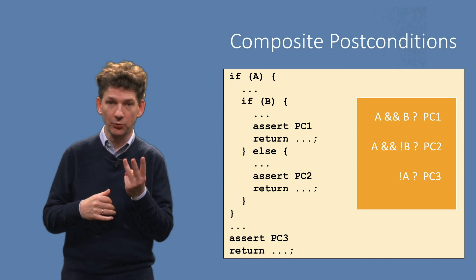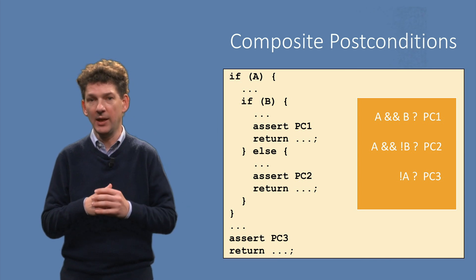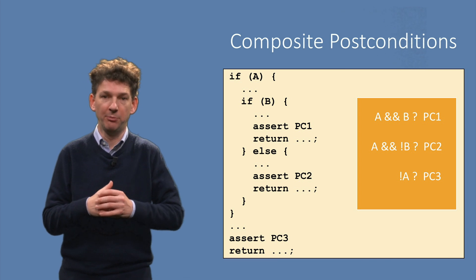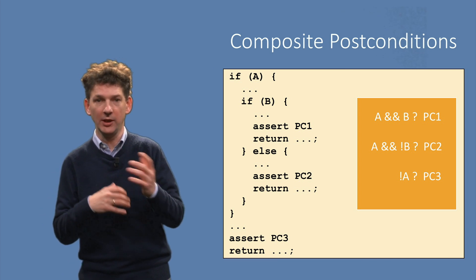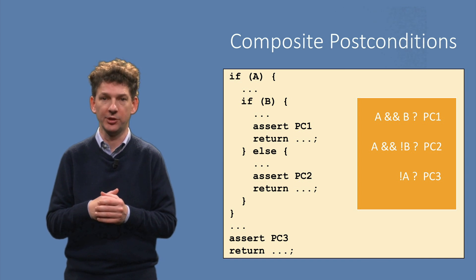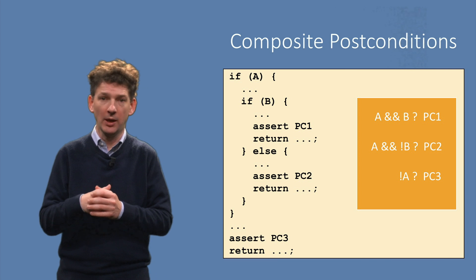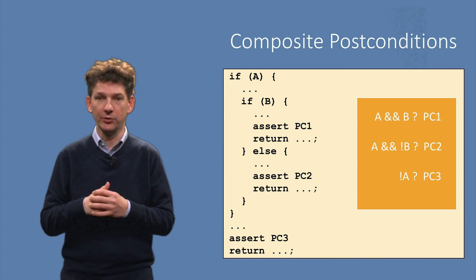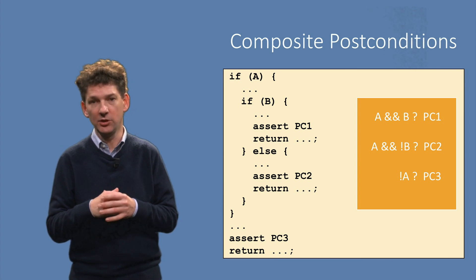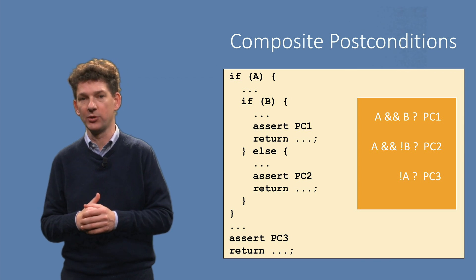Here we see a method body with three different return statements. Each of these may have a separate post-condition. In general, the better coding style is to have a single exit statement with one easily understandable overarching post-condition. With multiple return statements or multiple paths, the effective post-condition is a disjunction of propositions — the method guarantees post-condition 1, 2, or 3 under different circumstances.